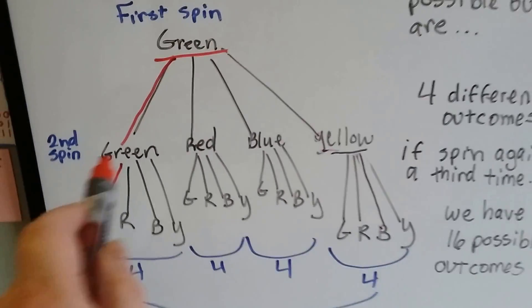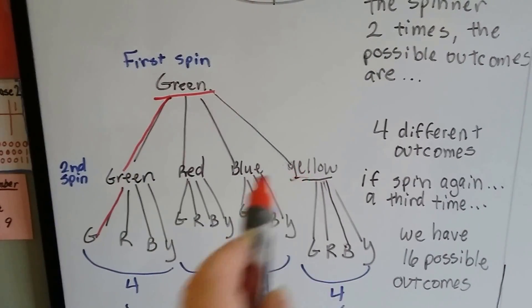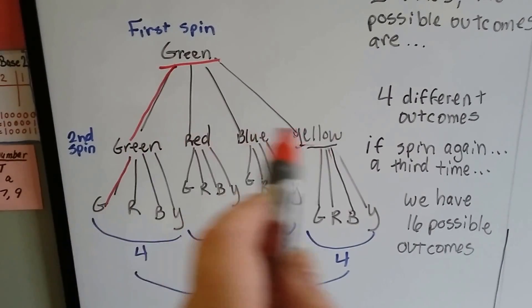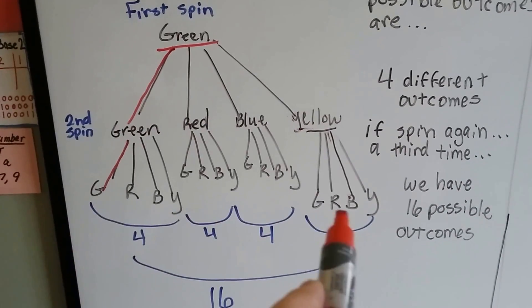So there was four possible outcomes when I spun it then. Now there's 16 possible outcomes. It went from 4 to 16. The 4 squared, 4 times 4 is 16, see?